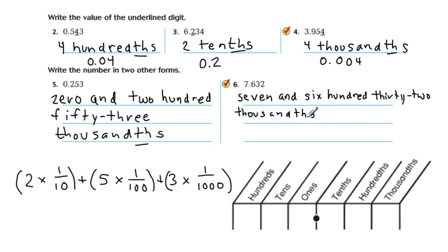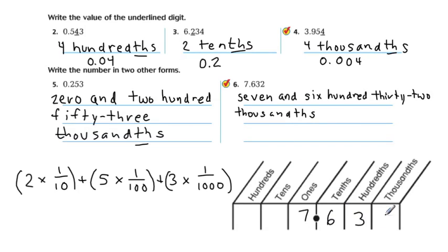All right, that's one form — word form. So now let's write this in expanded form. In expanded form, you have 7 in the ones place, 6 tenths, 3 hundredths, and 2 thousandths.